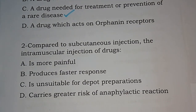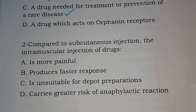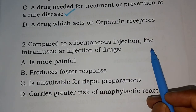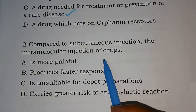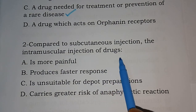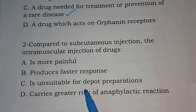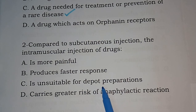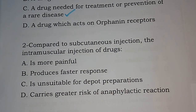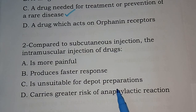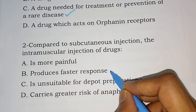Question number two: compared to subcutaneous injection (SC injection), the intramuscular injection of drug — options are: is more painful; produces faster response; is unsuitable for depot preparation; carries greater risk of anaphylactic reaction. Compared to SC, IM injections produce a faster response. Option B is the correct answer.